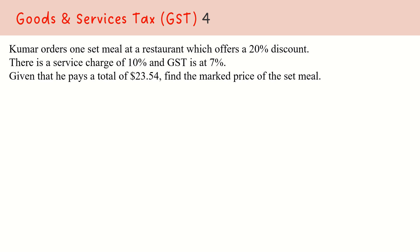Now let's take a look at another example. Kuma orders one set meal at a restaurant which offers a 20% discount. There is a service charge of 10% and GST is at 7%. Given that he pays a total of $23.54, we want to find the marked price of the set meal. In this particular example, we are going to be calculating in reverse.